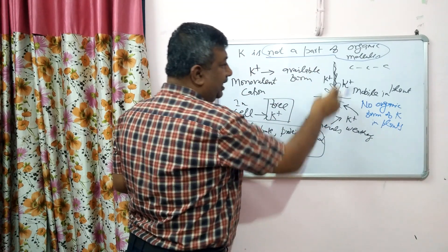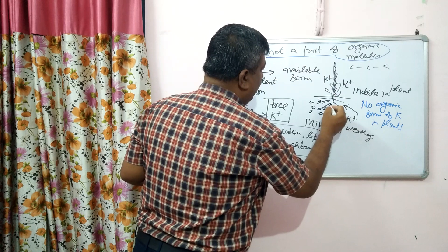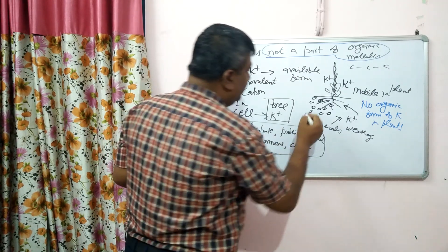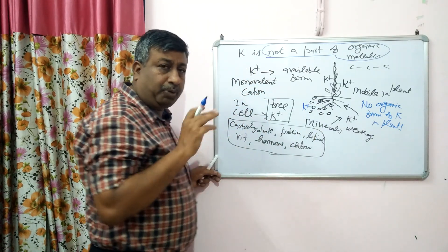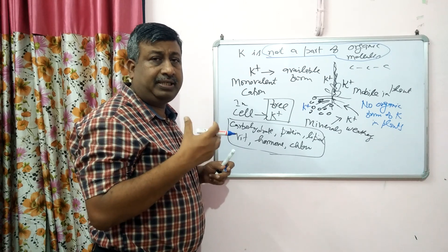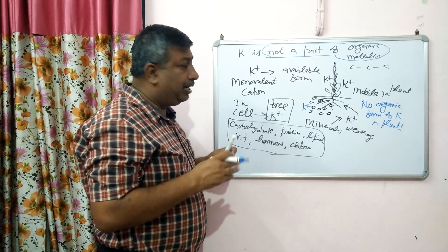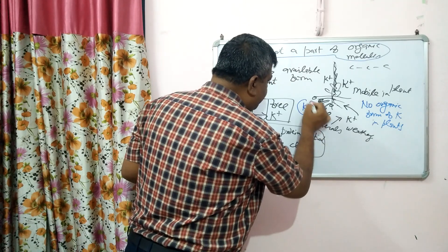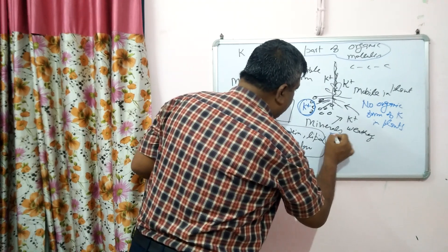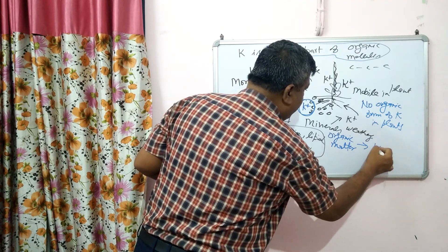Now, what happens after the death of the plant? The plant residues are there — whatever root, straw, or leaves. This potassium remains as such, as K+. So potassium is present in plant residue, potassium is present in FYM (farmyard manure), potassium is present in compost. In all organic materials like crop residue and FYM, it remains as such K+.